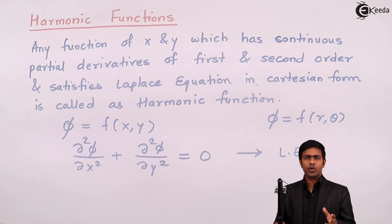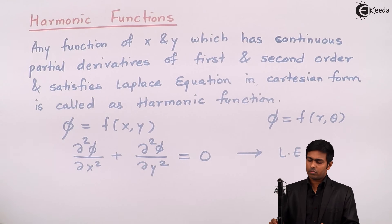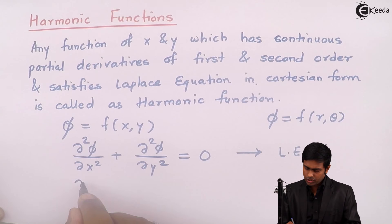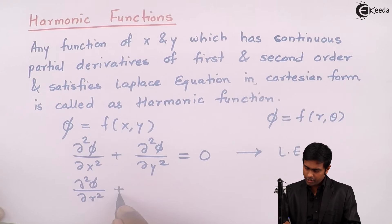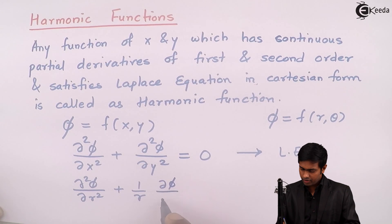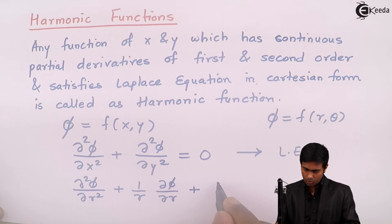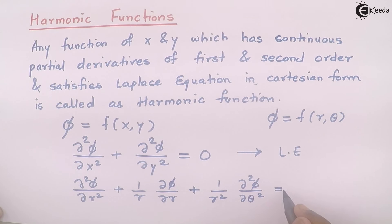What is the Laplace equation in polar form? It is: ∂²φ/∂r² + (1/r²)(∂²φ/∂θ²) = 0.